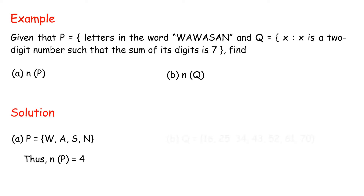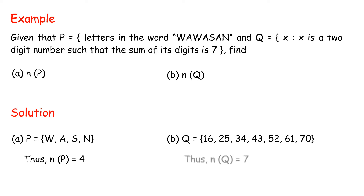B: Q = {16, 25, 34, 43, 52, 61, 70}. Thus, n(Q) = 7.